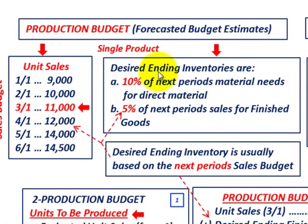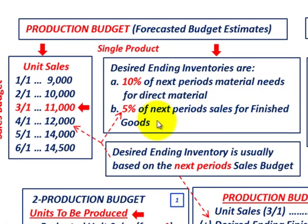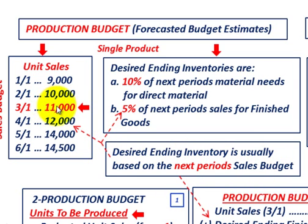We also have to know our desired ending inventories. They are based on 10% of the next period's material needs for direct material, and 5% of the next period's sales for finished goods — and we're dealing with finished goods here when determining our total production units. Our desired ending inventory is based on the next period's sales budget, so for the month of March our desired ending inventory has to be for the month of April.